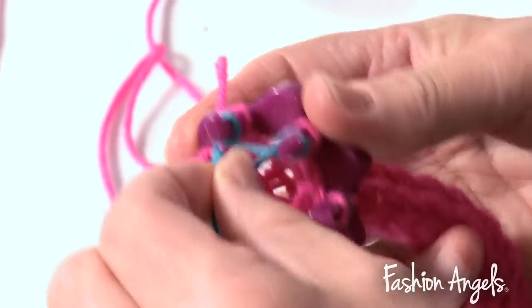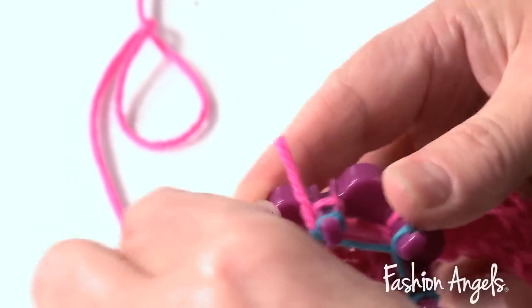And continue wrapping the blue yarn around the loom just as we did with the pink yarn.